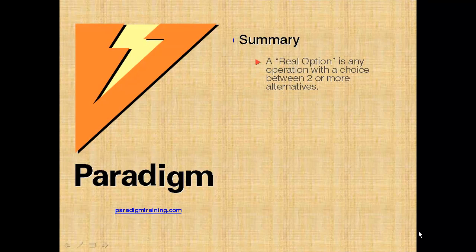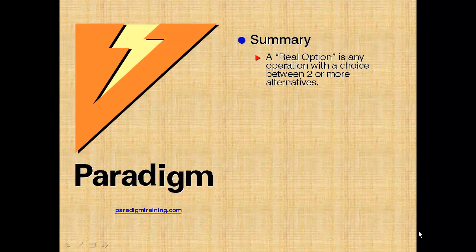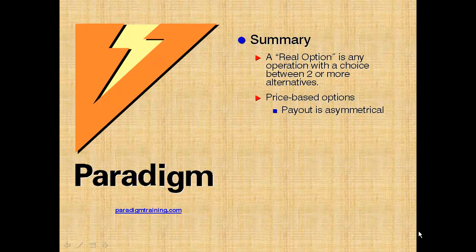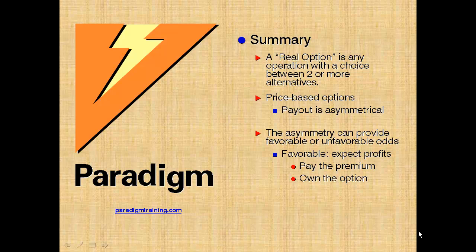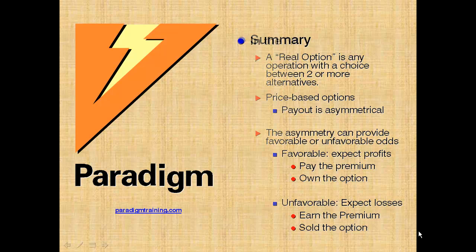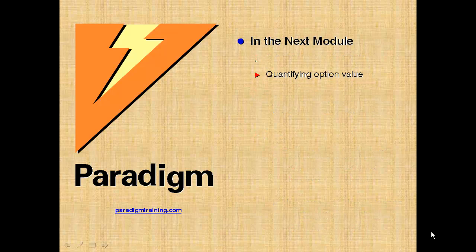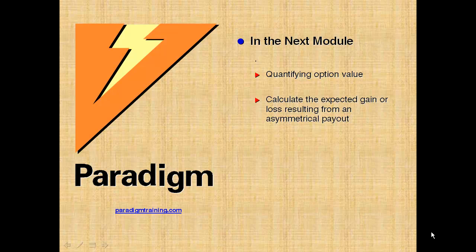In summary, a real option allows you to choose between two or more alternatives. All price-based options are characterized by their asymmetrical payouts. These asymmetries alter the odds, which now can be favorable or unfavorable. If the asymmetry creates favorable odds, we would expect profits, and so we would be willing to pay the premium to buy the option. If the odds are unfavorable, we would expect losses. We would need to earn a premium to take on the risk position. We are selling the option. In the module that follows, we will put some numbers on these concepts by actually quantifying option value. The asymmetrical payouts result in either expected gains or expected losses. We will actually calculate that by introducing the concept of volatility, and we'll see how price dispersion determines option premiums.